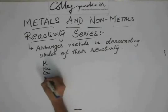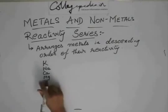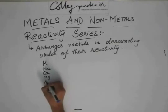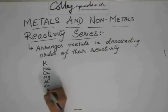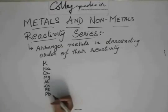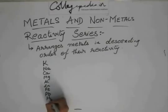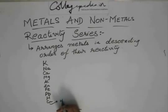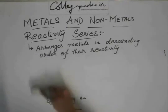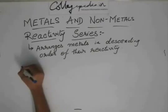After that, you have calcium. Then you have magnesium. Then you have aluminum, then zinc, then iron, lead, hydrogen, copper, then you have mercury, silver, and gold. Let me write it in a better way. Or let us write it like this.